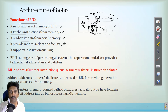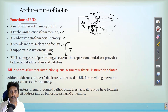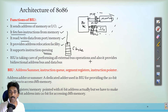It provides an address relocation facility, which is an important function of the bus interface unit. Sometimes in a multiprocessor or multiprogramming system we can send a program to another segment to relocate it using the address relocation facility. It also supports instruction queuing — unlike the 8085, the 8086 supports a queuing system where instructions are prefetched into a six-byte long queue. Finally, the bus interface unit takes care of performing all external bus operations and provides a bidirectional address bus and data bus.